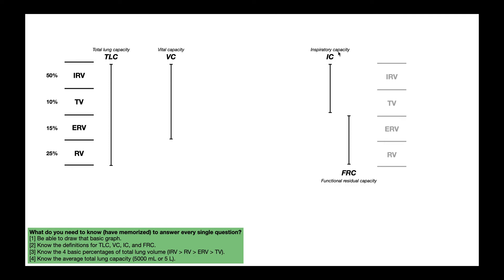Then we have IC, or inspiratory capacity. By definition, it is the maximum volume of air that can be inspired after a normal tidal exhalation. Inspiratory capacity is the sum of the IRV and the tidal volume. We could also say inspiratory capacity is vital capacity minus the expiratory reserve volume. Then we have the functional residual capacity, or FRC, which by definition is the volume of air in the lungs after a normal exhalation — it includes the expiratory reserve volume and the residual volume. Note that inspiratory capacity plus FRC equals total lung capacity.